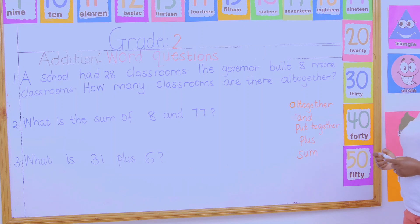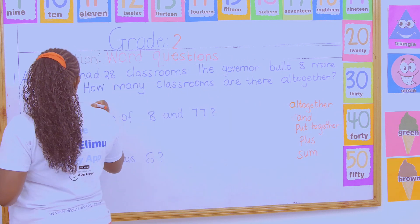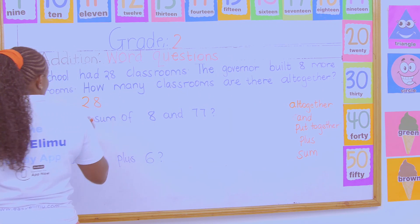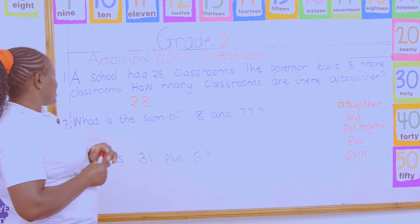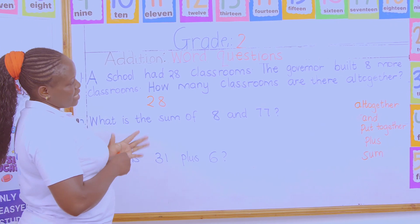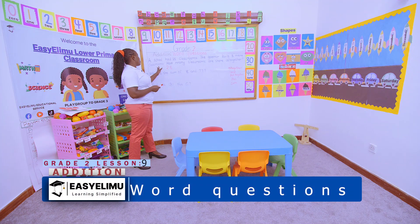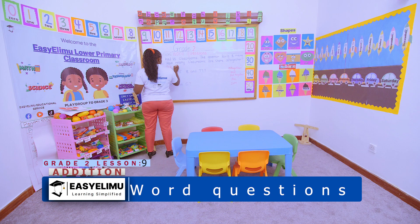So we are saying: a school had 28 classrooms. When the governor visited the school and realized it needed 8 more classrooms, he decided to add 8 more classrooms this year. So how many classrooms were there all together?